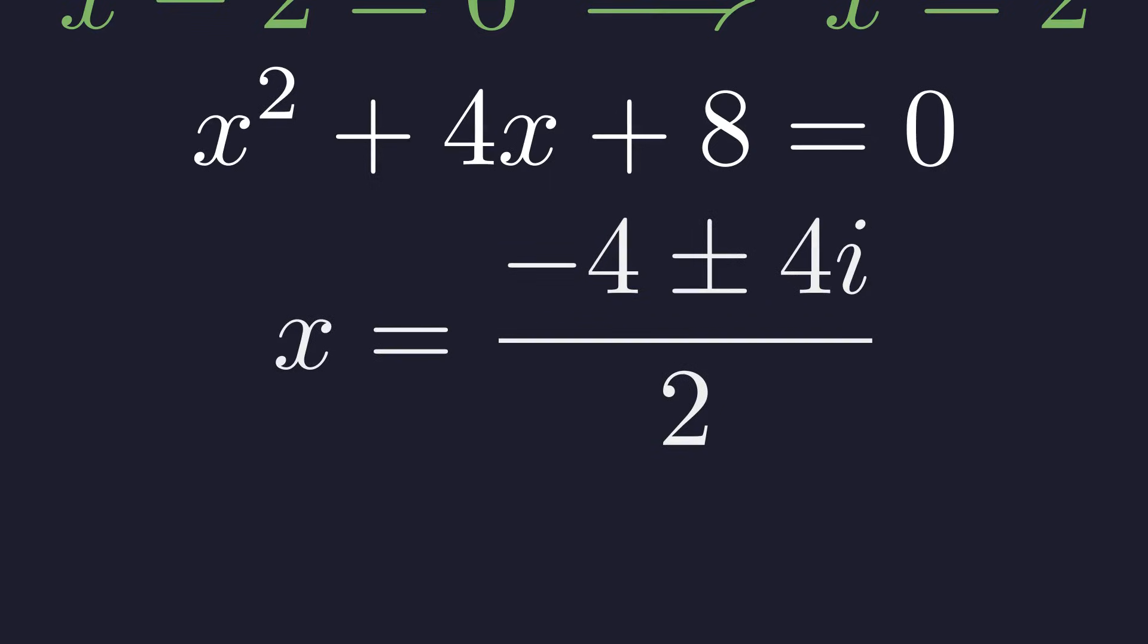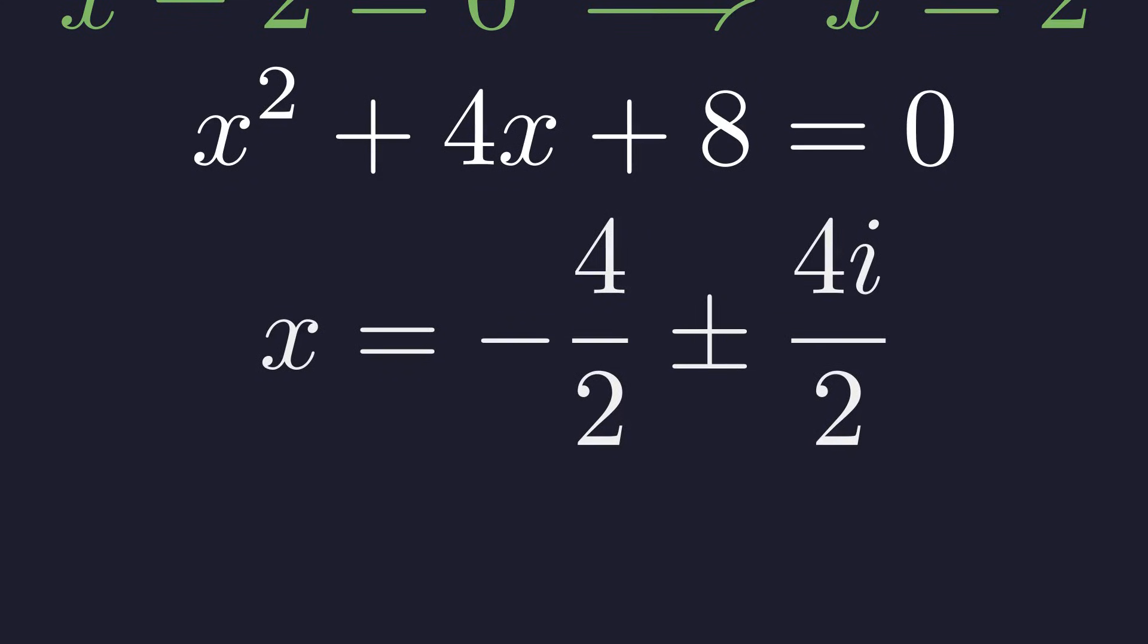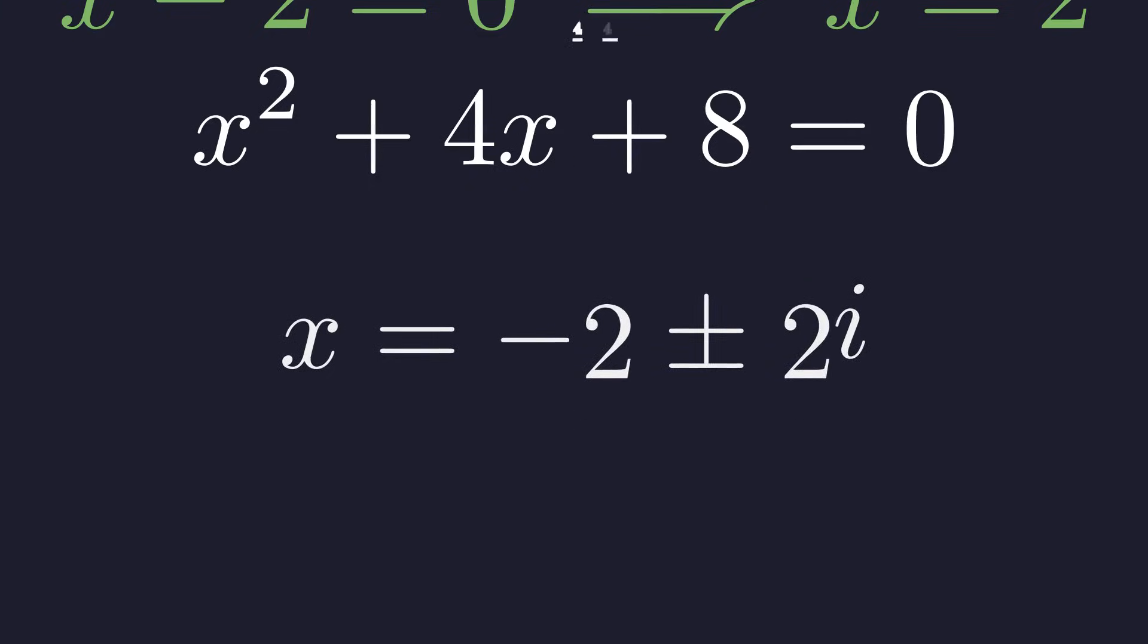The square root of negative 16 is 4i, where i is the imaginary unit. To finish the simplification, we'll divide both the real and imaginary parts by 2. And this gives us our two complex conjugate solutions. Negative 2 plus 2i and negative 2 minus 2i.